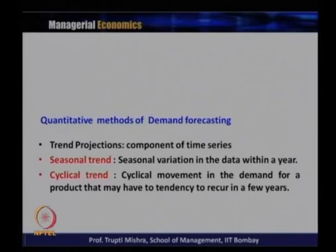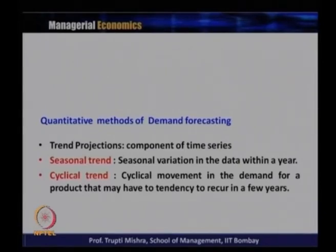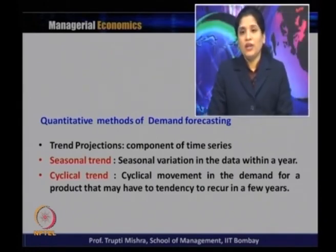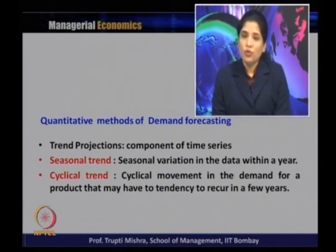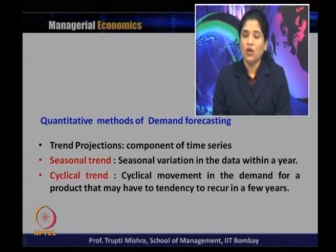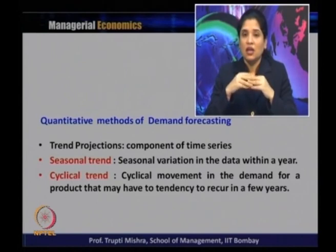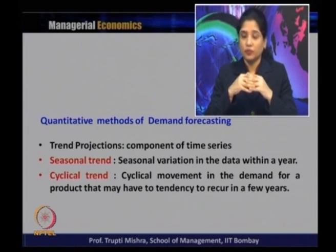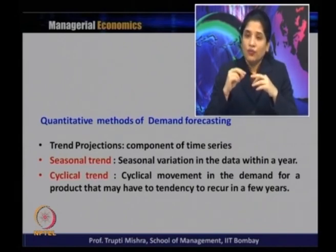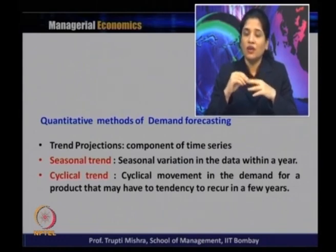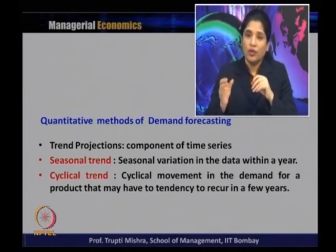The second component is seasonal trend, which is the seasonal variation in the data within a year. For example, the demand for ice cream will be high in summer and comparatively low in winter and rainy season. This variation will be present throughout the time series data within each year. Similarly, the demand for winter garments is more in winter and less in summer. If it is a seasonal product, the variation in the data follows that specific season when the product is generally used.